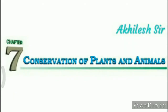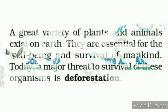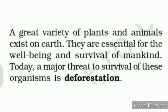Hi children, this is Achilles sir with a new video of science. Chapter number 7, Conservation of Plants and Animals. A great variety of plants and animals exist on earth. They are essential for the well-being and survival of mankind.